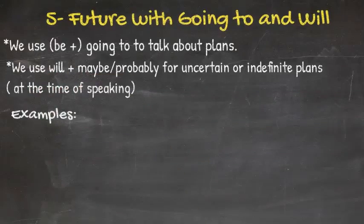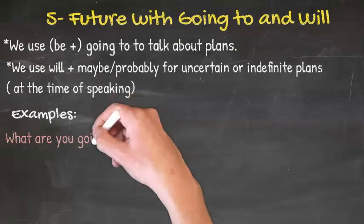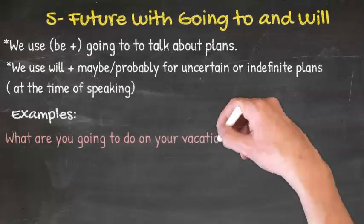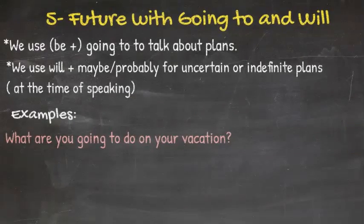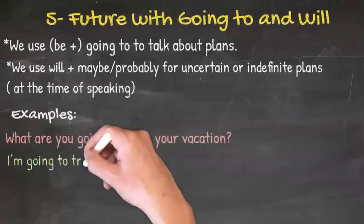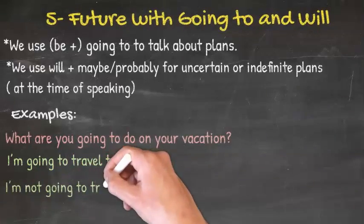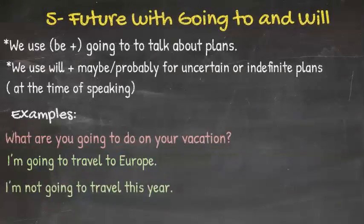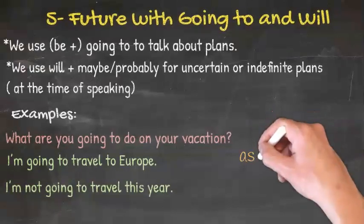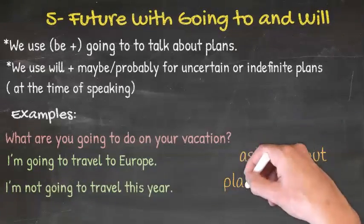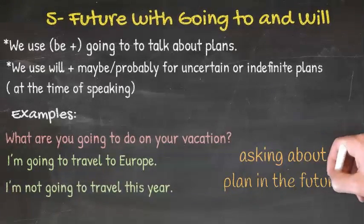Let's see the examples. A double check question example. What are you going to do? Are you going to travel to Europe? For a future answer, I'm not going to travel this year. So basically it's asking about a plan in the future.